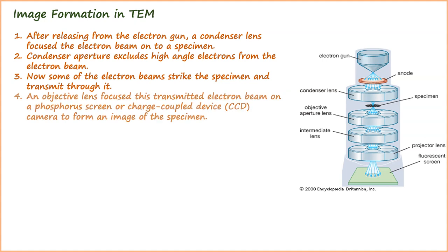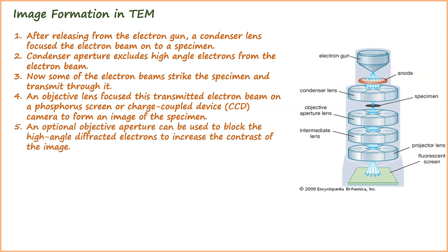An objective lens focuses this transmitted electron beam on a phosphorous screen or charge-coupled device camera to form an image of the specimen. An optional objective aperture can be used to block the high-angle diffracted electrons to increase the contrast of the image.